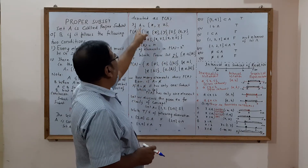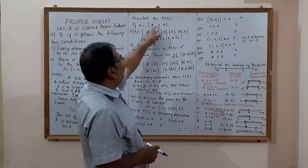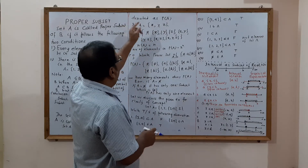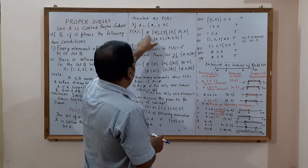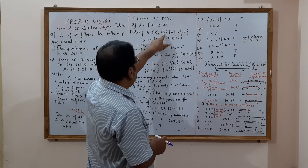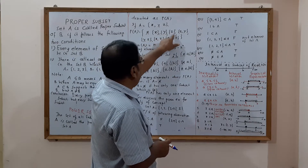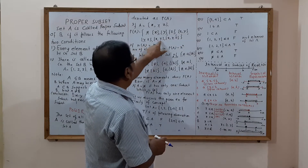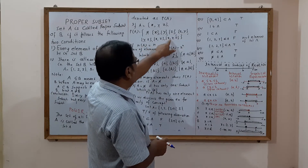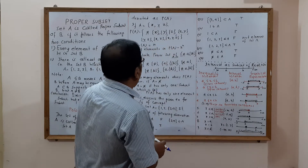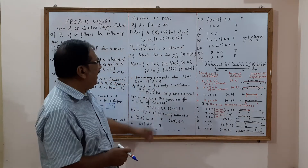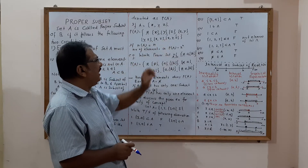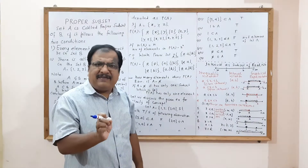Suppose set A = {x, y, z}. Its subsets are: the empty set, {x}, {y}, {z} individually, then {x,y}, {y,z}, {x,z}, and the set itself {x,y,z}. So the number of subsets is 8. For the power set, all these sets will act as elements.